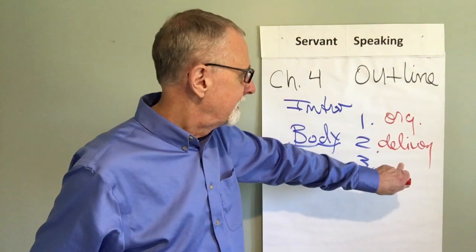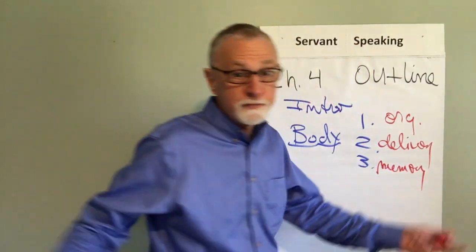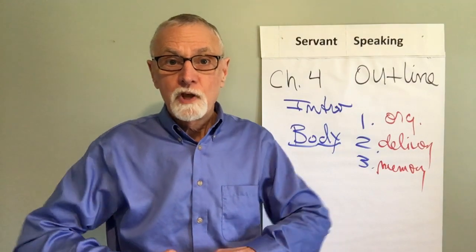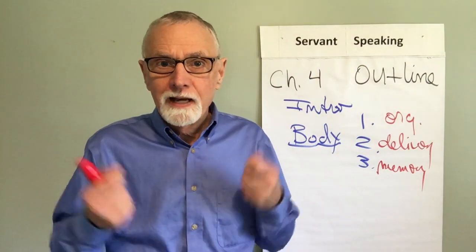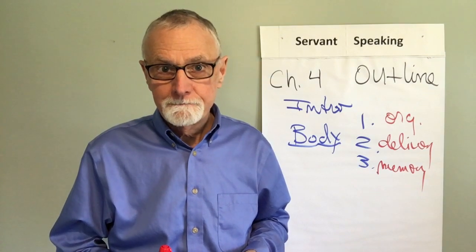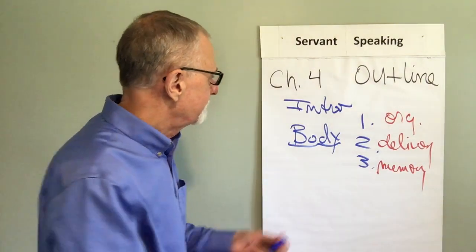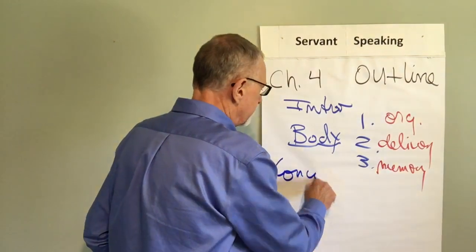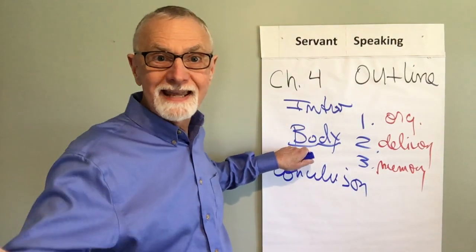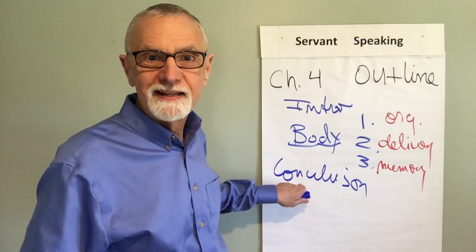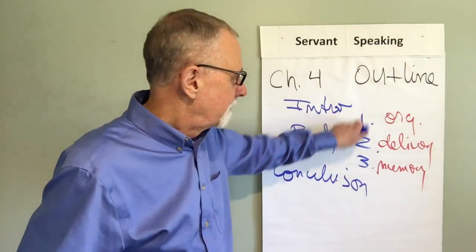So an outline is critical for organization, it's critical for delivery, and it's also critical for memory. If we look at that outline and we've gone through it numerous times as we winnow it down for the speech, we're helping to remind ourselves what we're going to say. Those are three points covered in the body. Then we offer a conclusion. With the introduction, we say what we're going to say. With the body, we say it. With the conclusion, we remind the audience what we just said — we summarize it. This is what we've said; this is why an outline is so important.